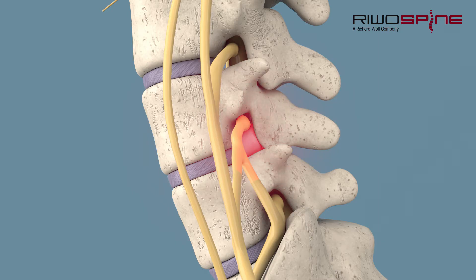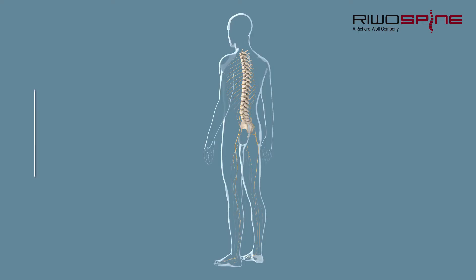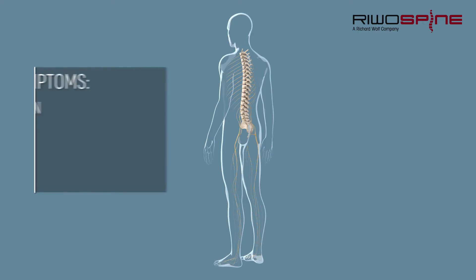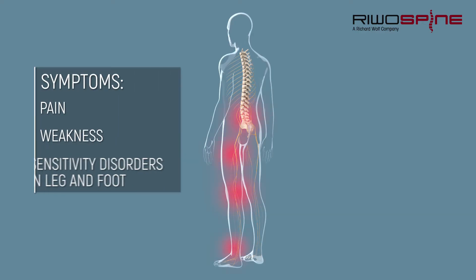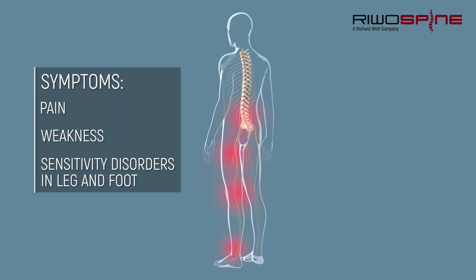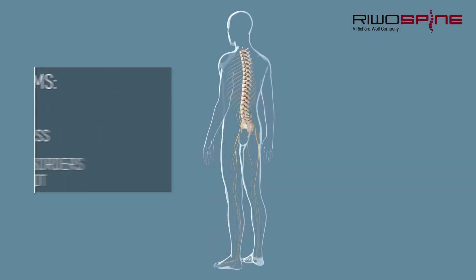Depending on the anatomical structures and location of the herniated disc, the symptoms can be very different. It is possible that disc tissue compresses important neural structures, causing pain, sensitivity disorders, and limited mobility.